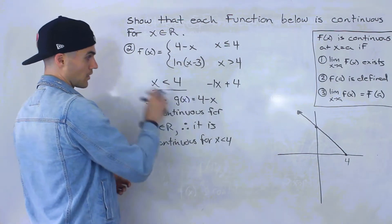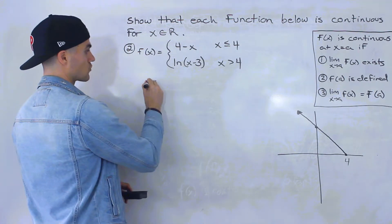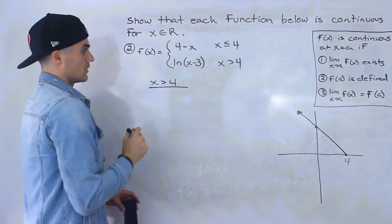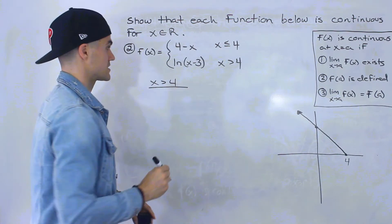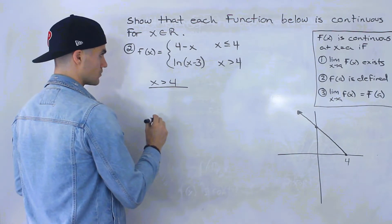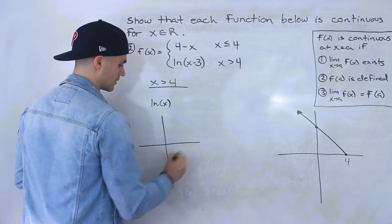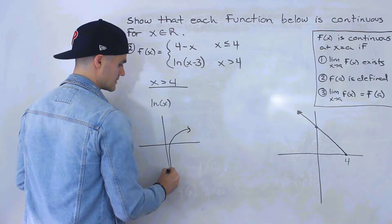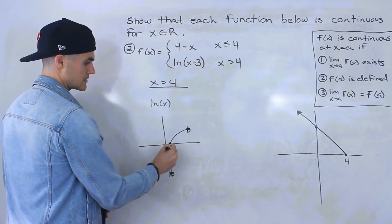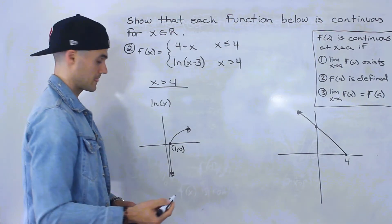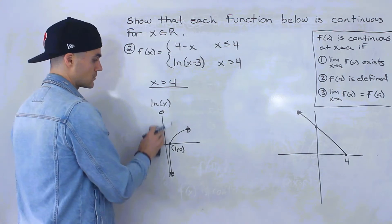Now, what about when x is greater than 4? When x is greater than 4, the function is defined by ln of x minus 3. Let's do a quick review: ln of x looks like this, with an x-intercept at 1 and 0, and a vertical asymptote at x equals 0.